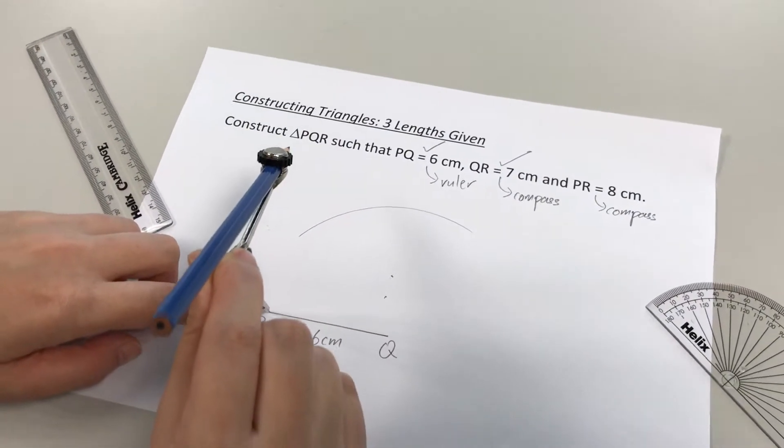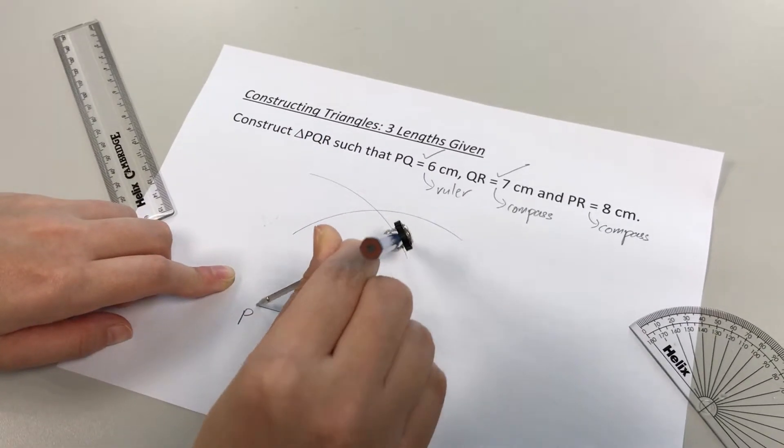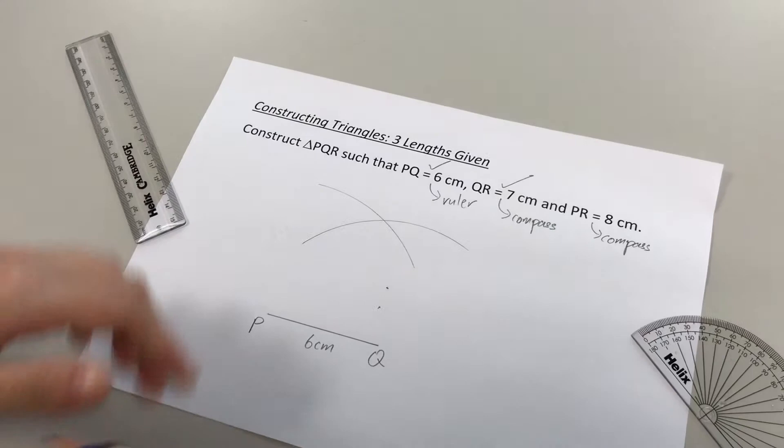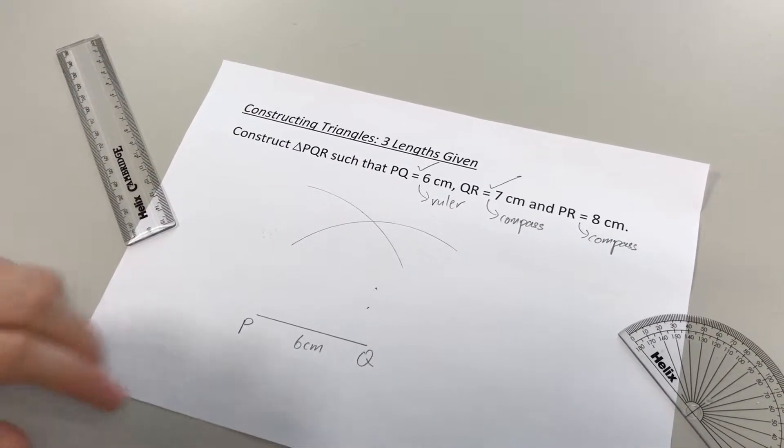All right, like this, I'll place the needle at P. Draw a curve. Okay, we don't have to draw it very long. We just need to make sure that the two curves that we have drawn have met each other.